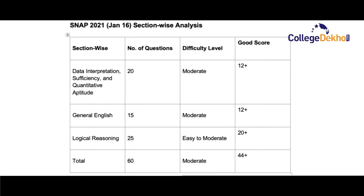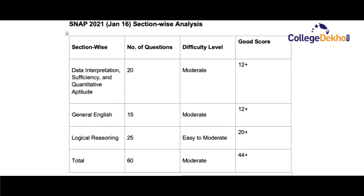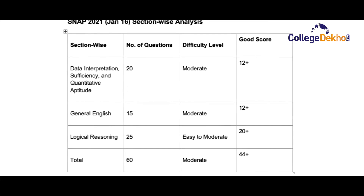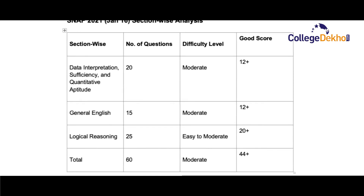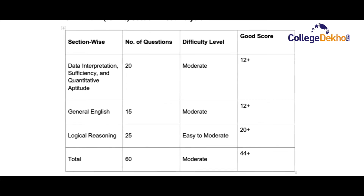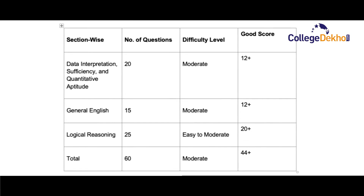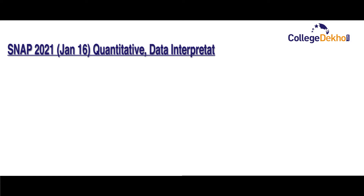A good score in the Quantitative Aptitude section is more than 12 marks, in General English is over 12 marks, and in Logical Reasoning is more than 20 marks. The overall good score candidates must acquire to secure MBA admission is around 44 or more.